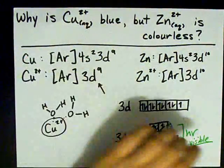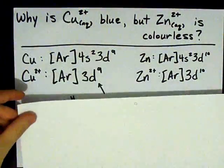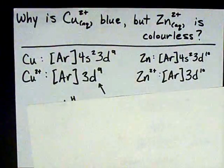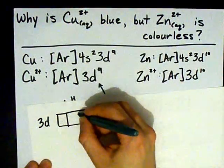But what about zinc being colorless? Well, let's check out what the split 3D looks like for a 3d10. Normally, the 3D for zinc looks like...